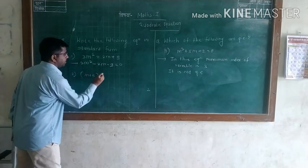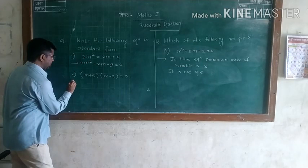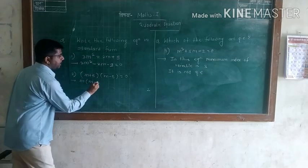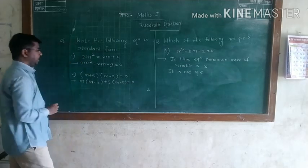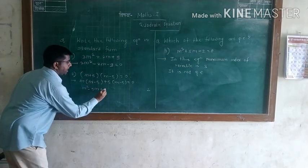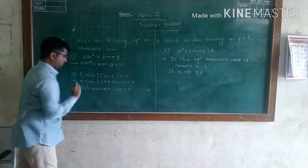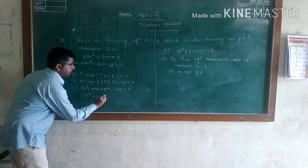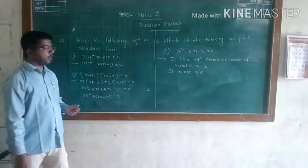Second example: (N + 5)(N - 5) = 0. We multiply out the brackets: N(N - 5) + 5(N - 5) = 0, which gives N² - 5N + 5N - 25 = 0, so N² + 0N - 25 = 0. This is the standard form of the given quadratic equation.